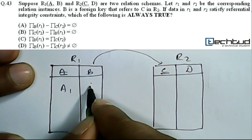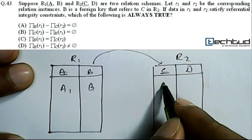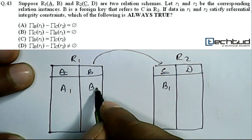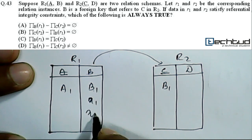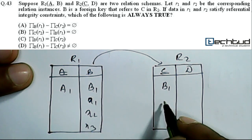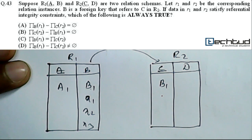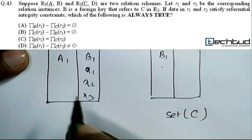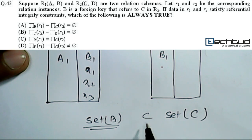Whatever we write — let us say A1, B1 — that B1 must already be present in C. Similarly, whatever values we keep entering, like x1, x2, x3, all must already be present in C, because we can insert data into this table only if the referenced value already exists. So at any particular time, the set of all C values will be a superset of the set of all B values, meaning set B is a subset of set C.